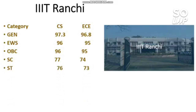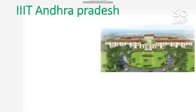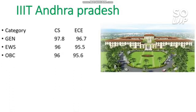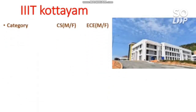IIIT Andhra Pradesh: category-wise cutoff for CS and EC. General requires 97.8 for CS and 96.7 for EC. EWS requires 96 and 95.5. OBC requires the same percentile as EWS. SC requires 86 and 82 percentile. ST requires 85 and 83 percentile.